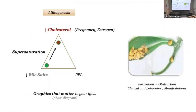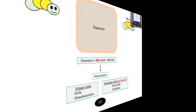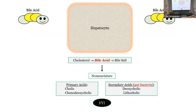This phase diagram — the lithogenesis curve — shows decreased bile salts and increased cholesterol leading to supersaturation. We'll cover this during liver. You can increase cholesterol through pregnancy or estrogen, which increases cholesterol via high HDL return to the liver. Or you get there through decreased bile. Primary bile acids get conjugated to bile salts; secondary acids are deconjugated. Bile salts become secondary acids.